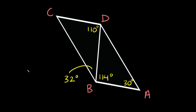Alright, here's the next example. So remember we want to fill in all the missing angles first. So first of all this angle up here — we have 110, here we have 32, so they all have to add up to 180, so that means this angle must be 38 degrees. And then on this triangle DBA, this is 114, this is 30, so then this angle up here must be 36 degrees. So now all the interior angles here and here each add up to 180 degrees.